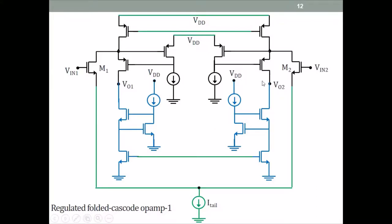It has two inputs and in fact two outputs — VO1 and VO2. It is naturally a differential input, differential output amplifier. The tail current source ITAL can be a single transistor or a cascode. What determines this is the specification for CMRR or common mode gain. If we need a very low common mode gain, we need the resistance of the tail current to be very high, so we make it a cascode or a single transistor with a very long channel length.